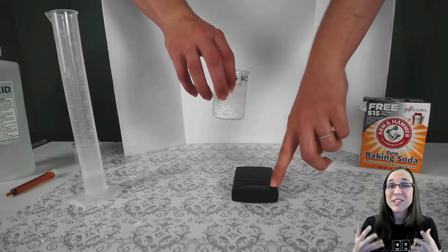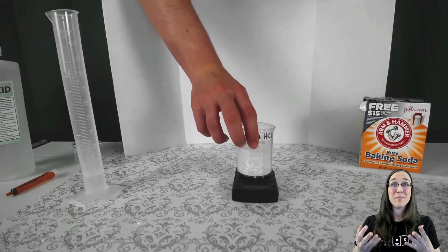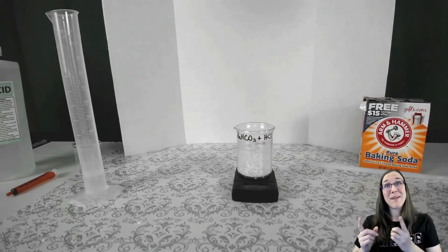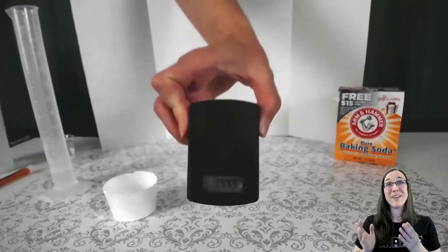Of course now we need to figure out how much table salt did we end up with. Well, good thing we took the mass of the beaker at the start. Now we can find the mass of the beaker at the final and subtract those two values. Here we have 55.5 grams.